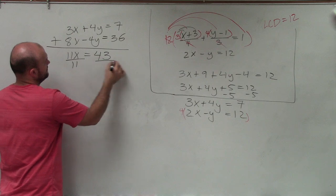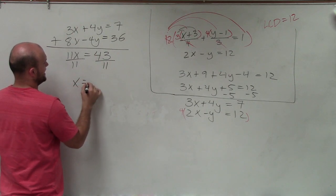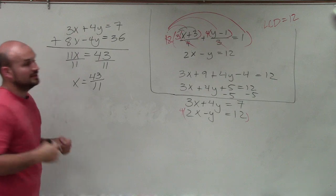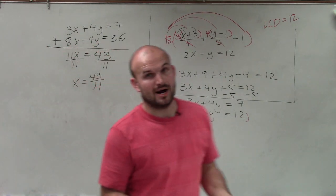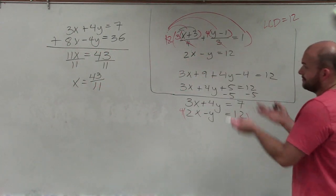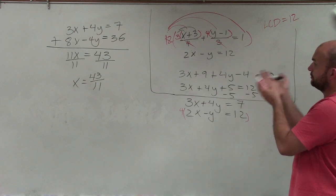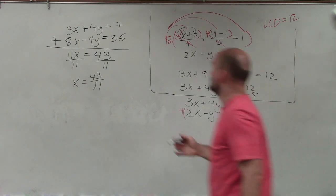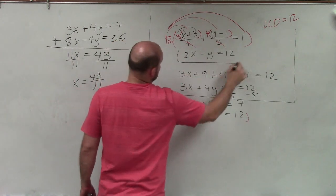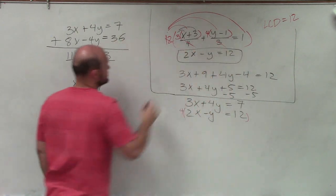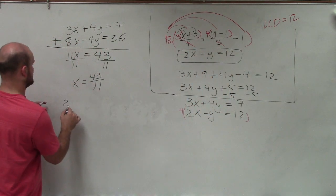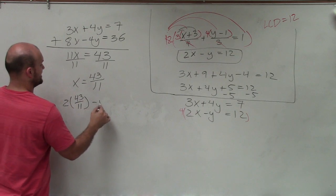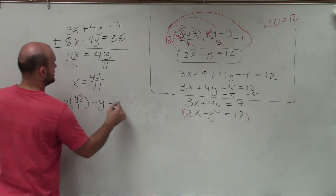Then I divide by 11 on both sides, and x equals 43 over 11. Now I need to go ahead and solve for y. To do that, I'm going to take that value and plug it back into my equation. I'll choose this equation, so I have 2 times 43 over 11 minus y equals 12.